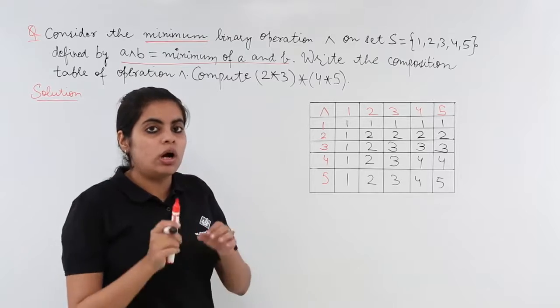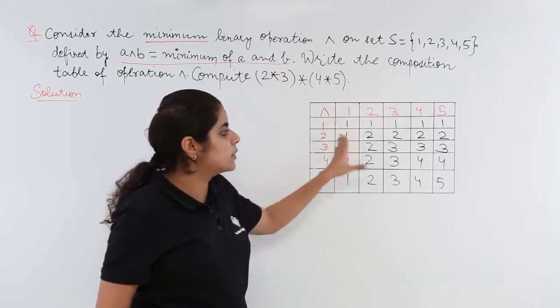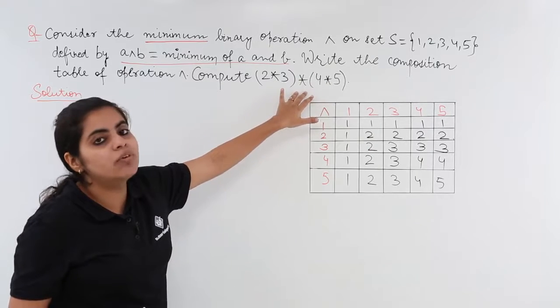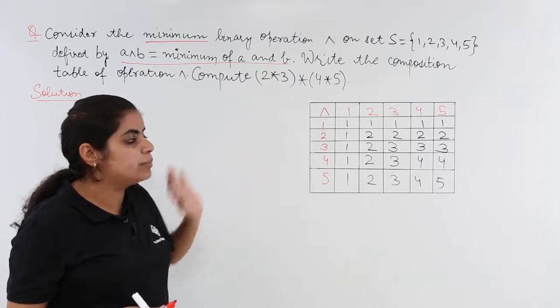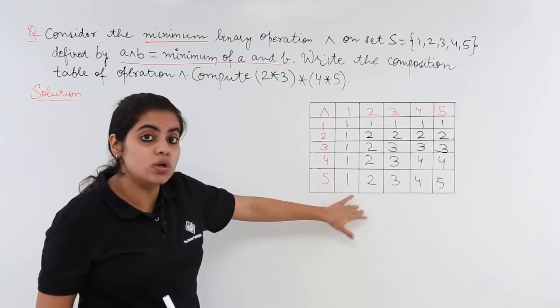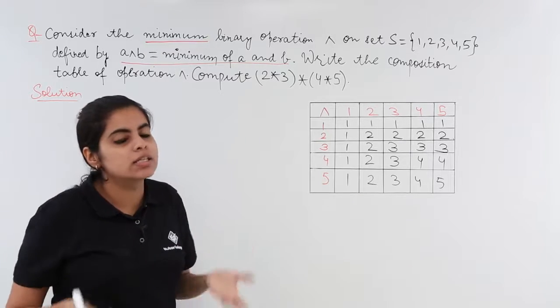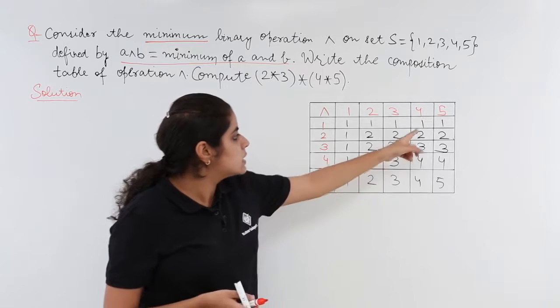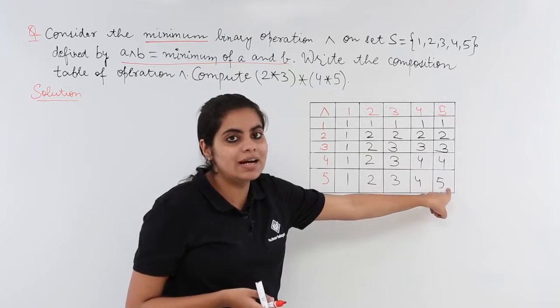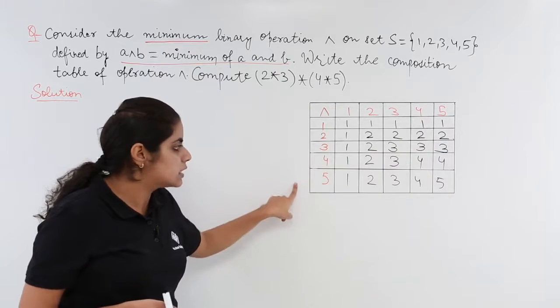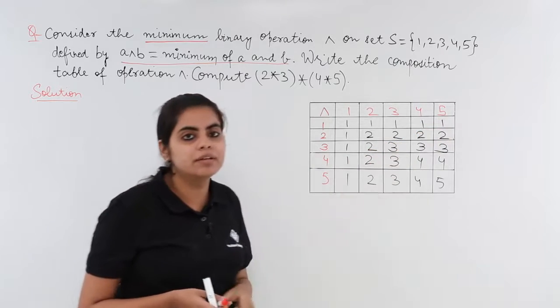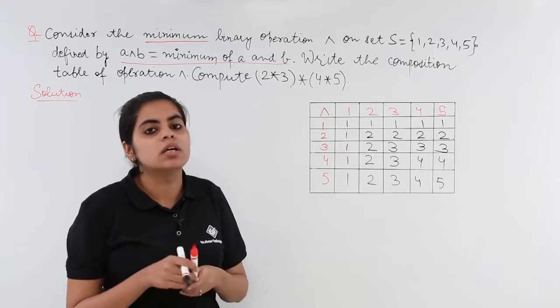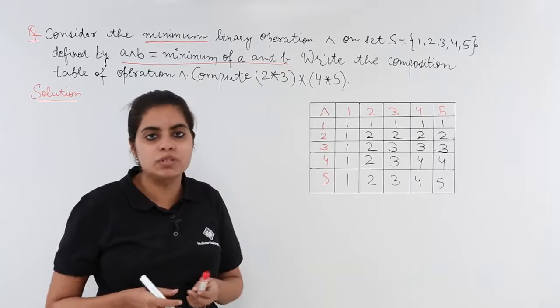The question asked me to write the composition table which is drawn. What else? I'm expected to find the value of this expression, which we'll do. But what if I was asked to find the inverse and identity elements? This can be done in the same manner as previous questions. The identity element would be 5, since the last row shows 1, 2, 3, 4, 5 similar to the first row. Although not asked, that's just for general knowledge. Similarly, to find inverse, you'd shade the identity elements as we did in previous questions.